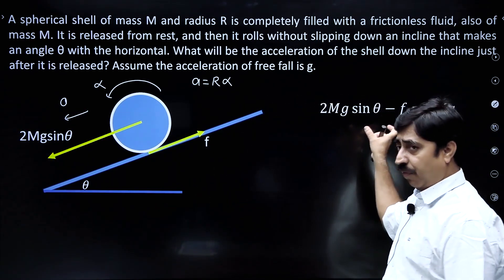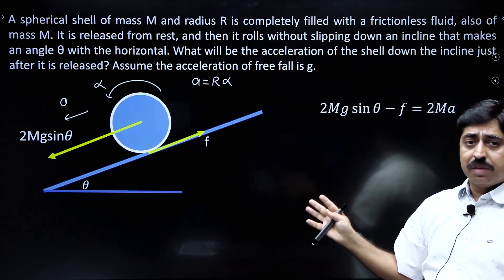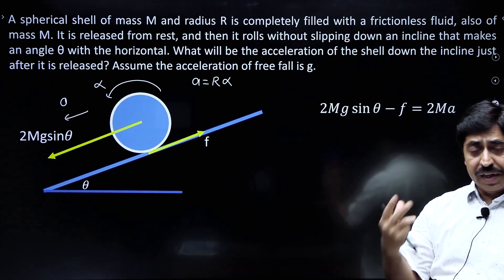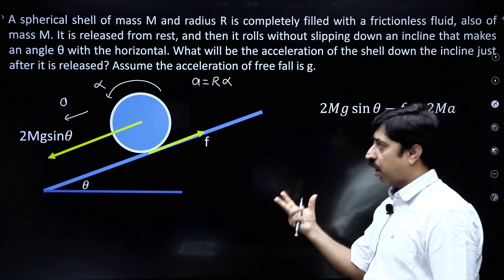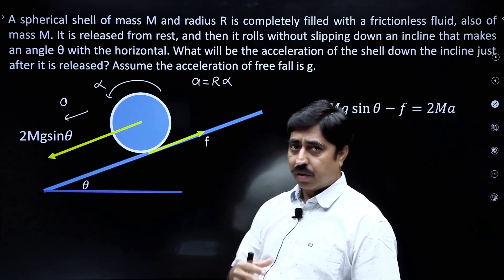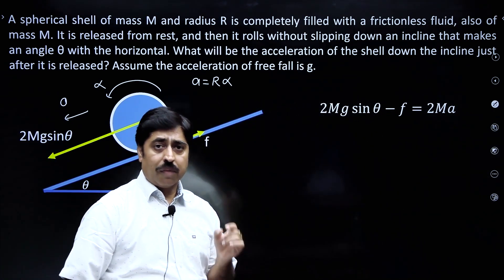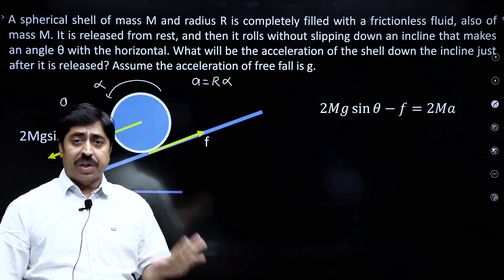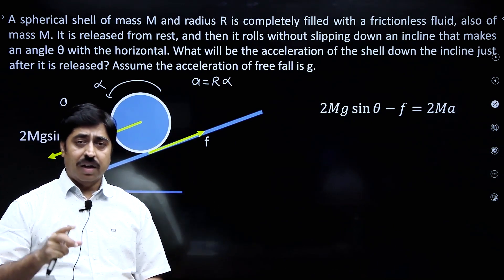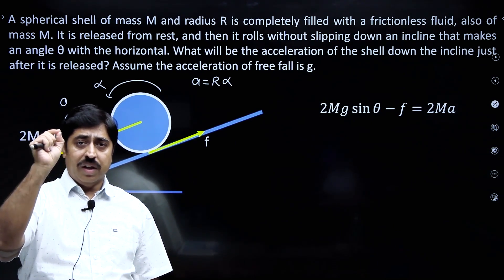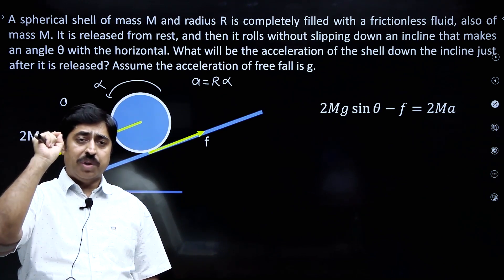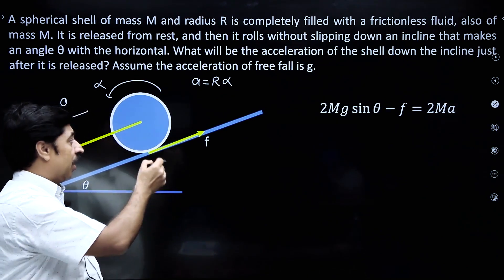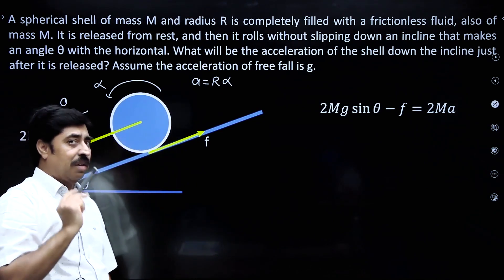The first equation was written for the complete assembly — the whole mass 2m. The next equation — torque equals I·alpha — I am going to write only for the shell. I am not considering the liquid in my system; I am just talking about the white colored shell.